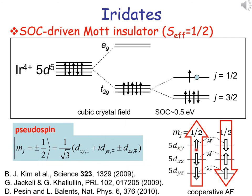Or pseudo-spin 1/2. A key feature of the pseudo-spin is that it has an internal orbital structure. It is a superposition of the three T2G orbitals partially occupied by one hole with different real spins. Hence, unusual exchange pathways could be opened by mixing the 3D and 5D atoms.